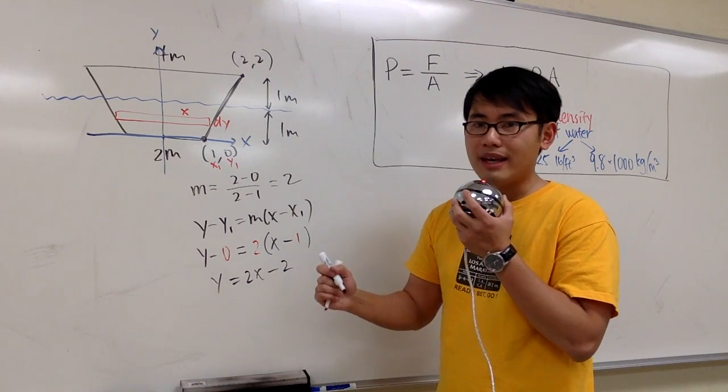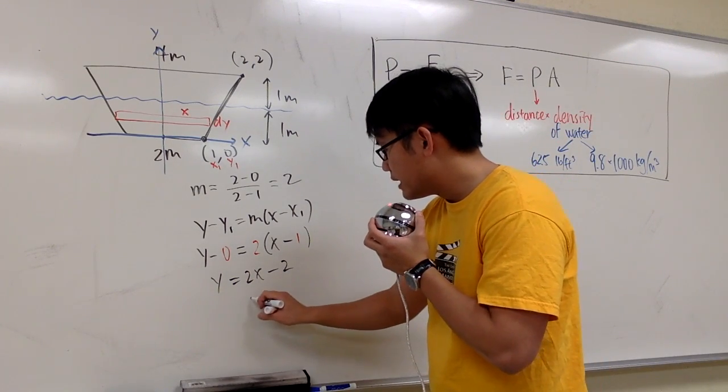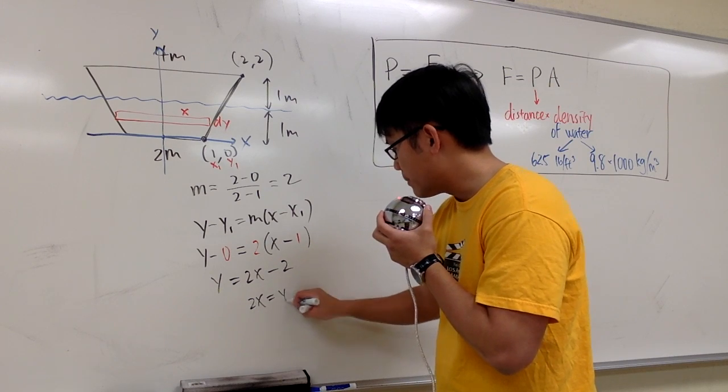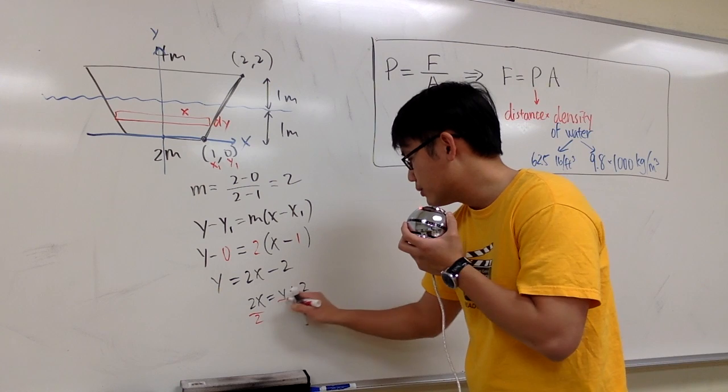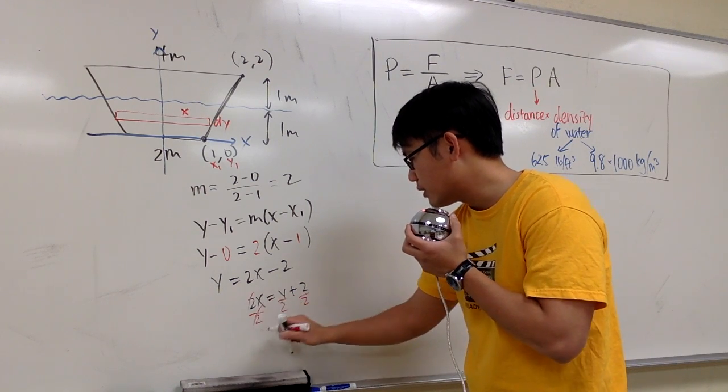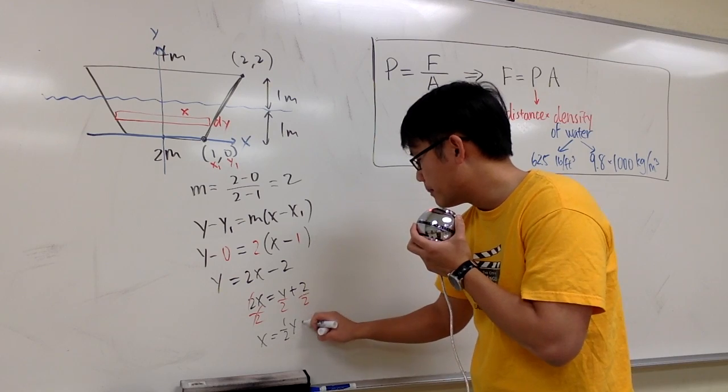But I don't want y, I want x in terms of y, so let's add 2 on both sides. That means 2x will be y plus 2, and I want to divide everything by 2. So divided by 2, divided by 2, divided by 2, so they cancel out. x will be 1 half y plus 1.